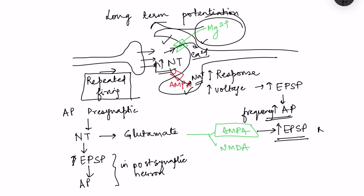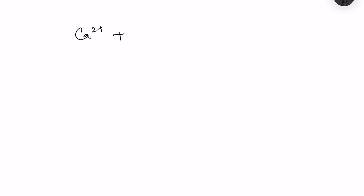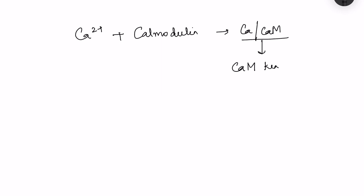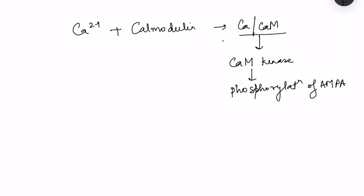So AMPA receptors cause entry of sodium ions leading to EPSP, and NMDA receptors cause entry of calcium ions. Because of calcium entry, there are certain downstream changes within the post-synaptic neuron. Calcium binds with a calcium-binding protein called calmodulin, activating the calcium-calmodulin pathway, which in turn activates calcium-calmodulin kinase. This causes phosphorylation of the AMPA receptors — which is important.